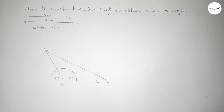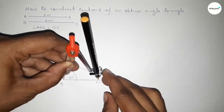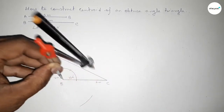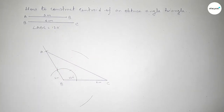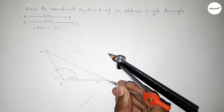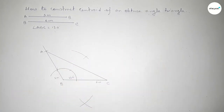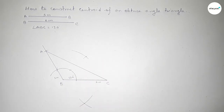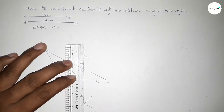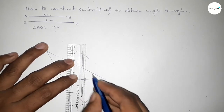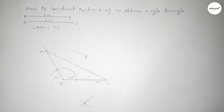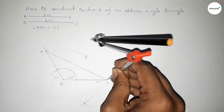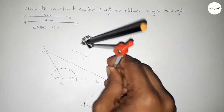Now bisecting line BC. Putting the compass at B and taking a length greater than half of BC, drawing an arc. With the same length, putting the compass at C and cutting arcs on both sides, so both curves intersect at two points. Joining these points gives a line that bisects BC at its midpoint.